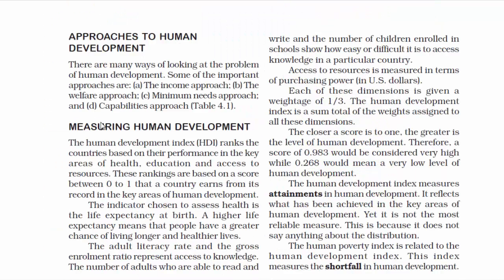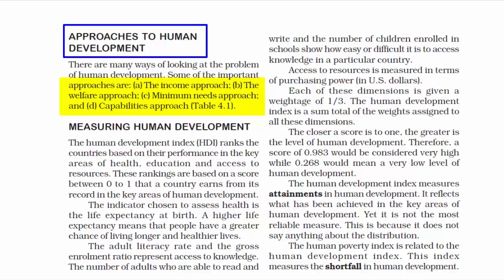We are now going to read about how to calculate human development — what are the approaches. To find a solution to any problem, we must look at the problems first. There are many ways of looking at the problem of human development. Some of the important approaches are: the income approach, the welfare approach, the basic needs approach, and the capabilities approach.